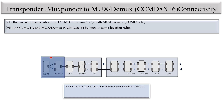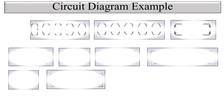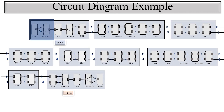On the CCMD8x16, ports 1 to 32 are the 16-channel add-drop ports connected to the OT and MOTR cards. The CCMD8x16 common ports — port numbers 33 and 36 — are connected to the fiber interconnect module. You can see the circuit diagram here.